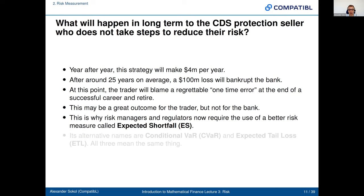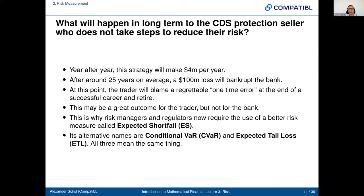The alternative names for Expected Shortfall are Conditional VaR, CVaR, or Expected Tail Loss (ETL) — all three mean the same thing. Note that CVaR today most likely means Conditional VaR, not Credit VaR, which is an outdated concept.